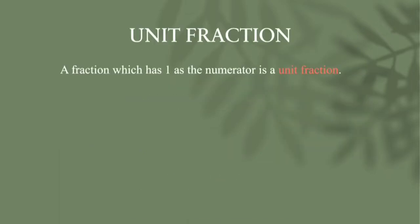Next, we can go for unit fractions. A fraction which has 1 as the numerator is a unit fraction. For example: 1 by 3, 1 by 7, 1 by 15. All three fractions have the same numerator, which is 1. This type of fraction is called a unit fraction.